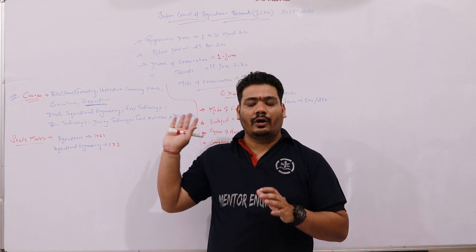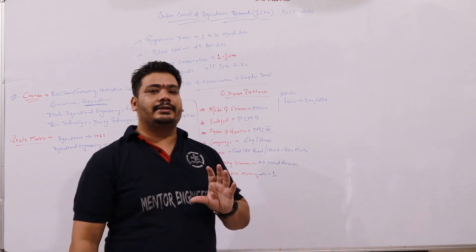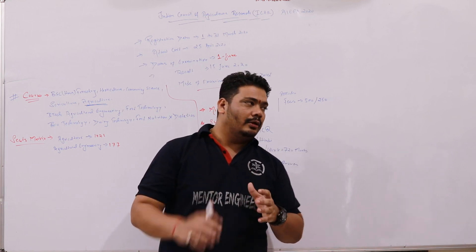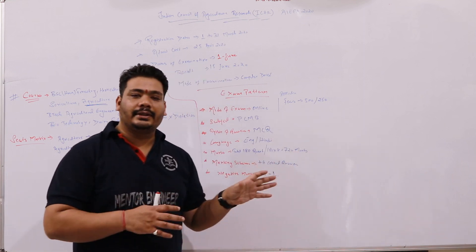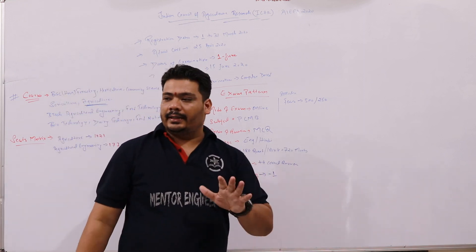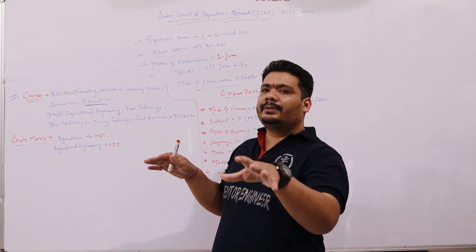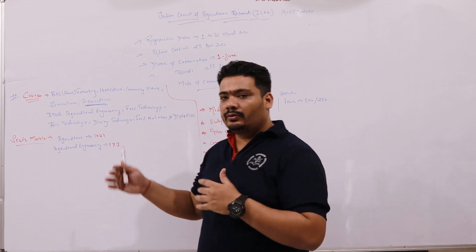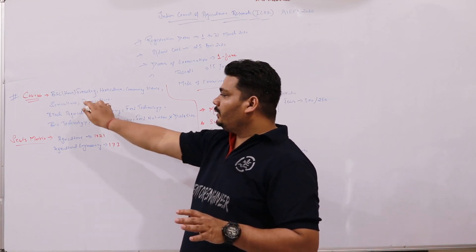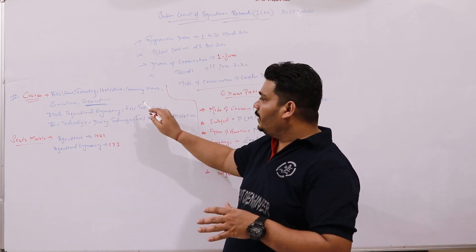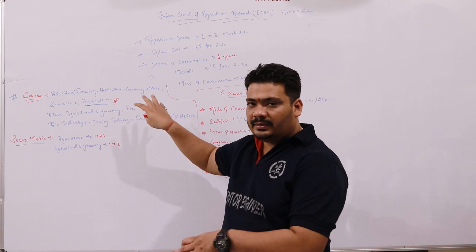There are two main course categories available. In B.Sc., you have a lot of scope and many courses in the market. After ICAR counseling, 15% of seats are available at the national level. Courses under B.Sc. include forestry, horticulture, community science, and agriculture. Agriculture is the most demanding course with the most seats.